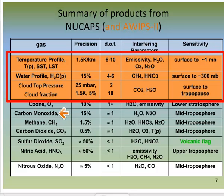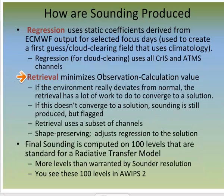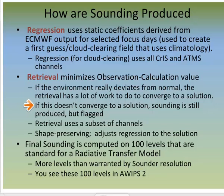Chemical species in NuCAPS that aren't available in AWIPS can be accessed via NOAA's CLASS. A physical retrieval is used to produce the sounding, minimizing the difference between observations and calculations. If the environment really deviates from normal, the retrieval has to do a lot of work to converge to a solution. If that convergence doesn't happen, the sounding is still produced but it's flagged.